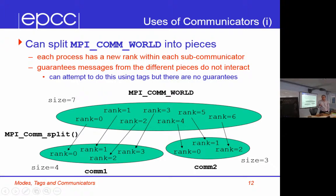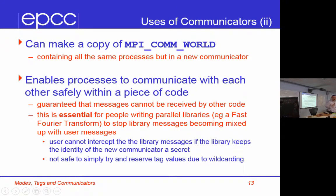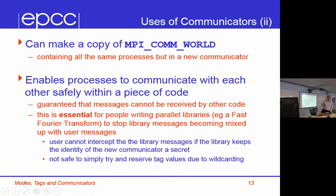If you're going to use a communicator other than comm world, you need to ask: how big is this particular communicator, and what is my rank in that one? You can't assume your rank is the same in all of them. Good practice: don't use the symbol MPI_COMM_WORLD in your code, apart from the very first time you use it to duplicate comm world. Instead, use a variable to refer to it — don't use MPI_COMM_WORLD throughout your code, use some variable you made up like 'my_comm'. Set that to the same value. That will make your code a lot easier to change later when you decide you want to use something other than comm world.